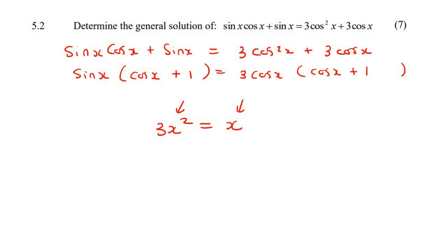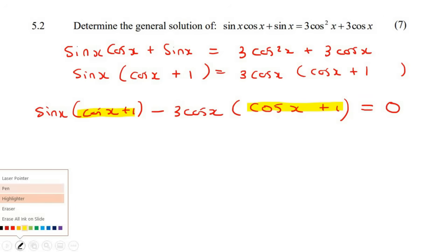So you're going to do the same approach here. We're going to take everything to the one side, and then we are going to factorize. The reason we can factorize is that we've got this term and this term which is common. We're going to take out a cos x plus one, and then we'd be left with sin x take away three cos x.